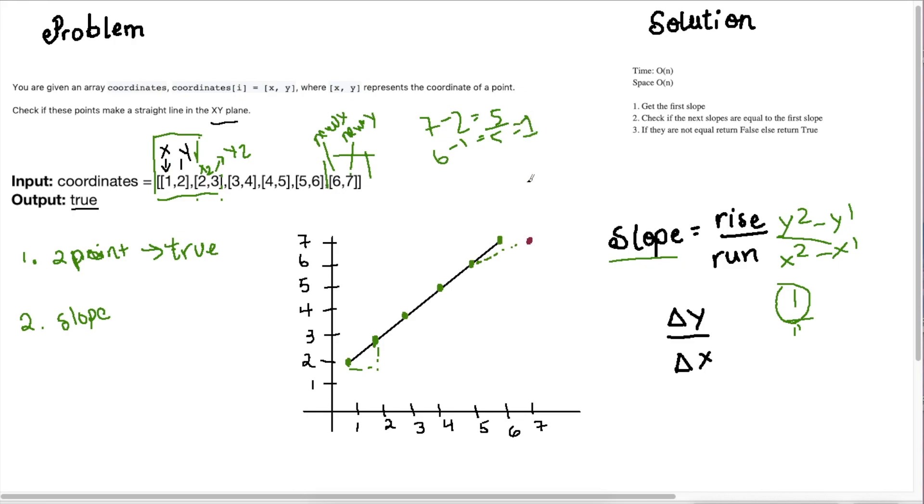So again, you can see that our initial slope is equal to our slope at any other point in this grid. So that's what tells us that yes, this line is straight because the rate of growth is the same. Now let's take a case where this slope is not the same. So let's say I had a point here. So 7, 7, right? So instead of 6, 7, let's say I had 7, 7 here, right?